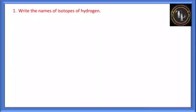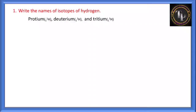First question: write the names of isotopes of hydrogen. There are three isotopes — protium, deuterium, and tritium. Protium (H-1-1) has atomic mass one and atomic number one, meaning one proton and zero neutrons. Deuterium has one proton and one neutron, so proton plus neutron gives atomic mass two. Tritium has one proton and two neutrons, so one plus two gives atomic mass three.